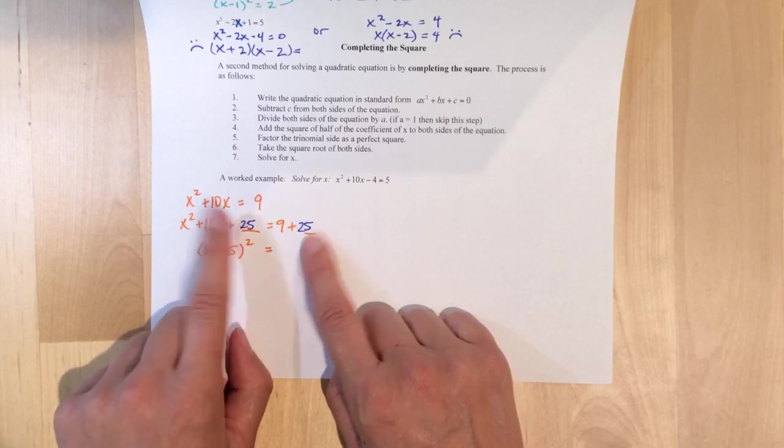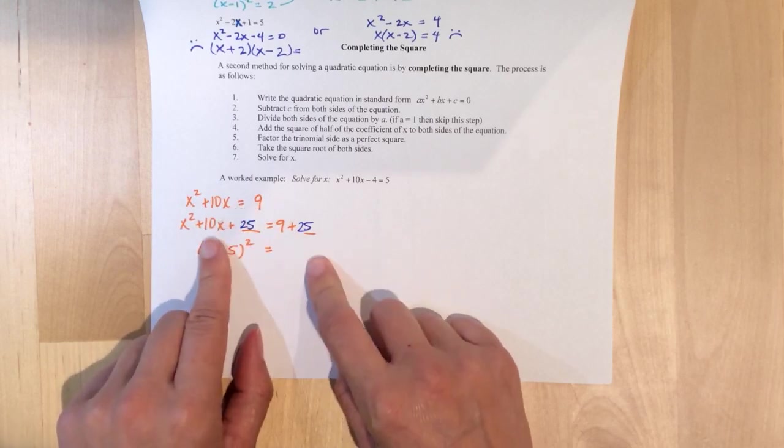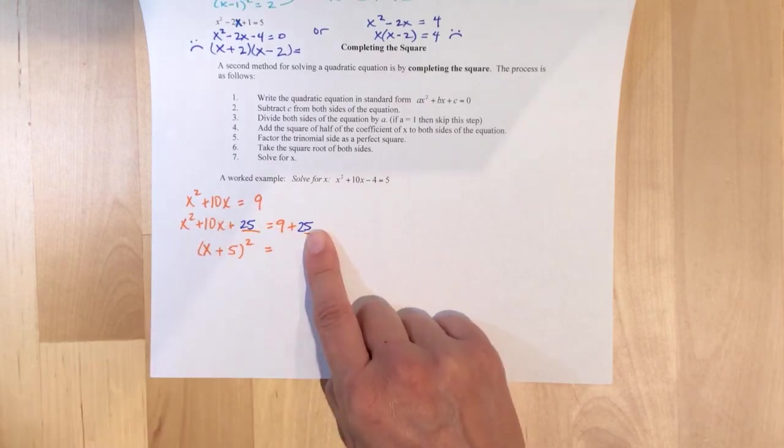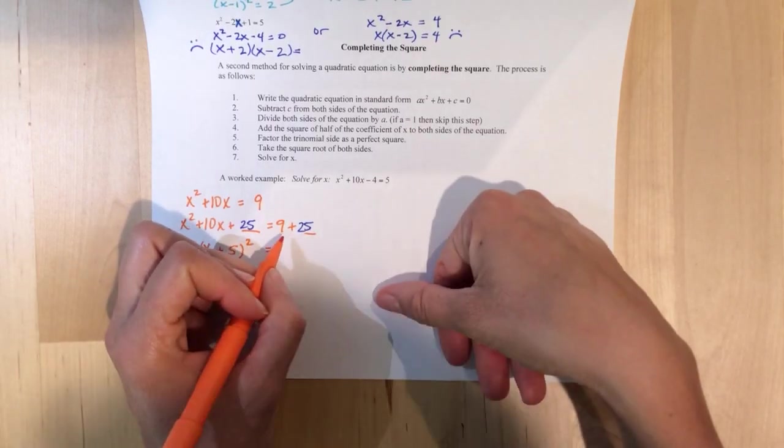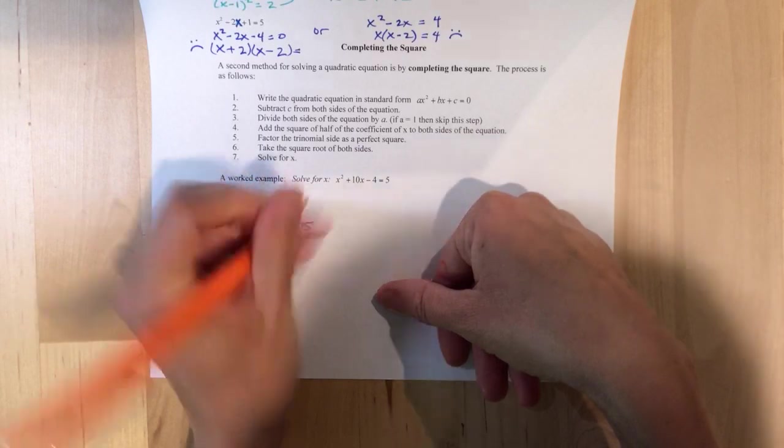So, we've added 25 to both sides. But here, on the left, don't worry about 25 again. But here on the right, you need 9 plus 25. So, 9 plus 25, what is that? 34? Cool.